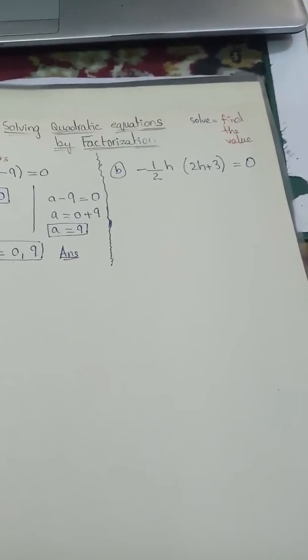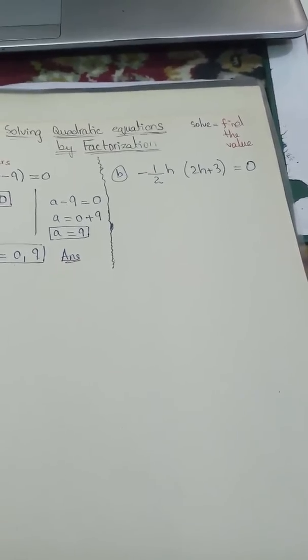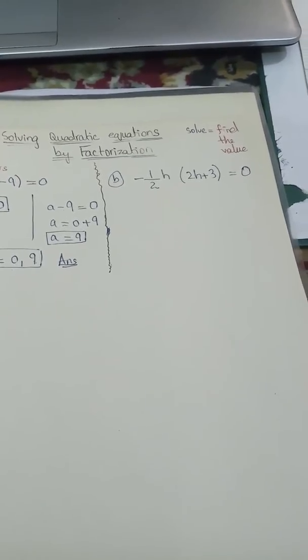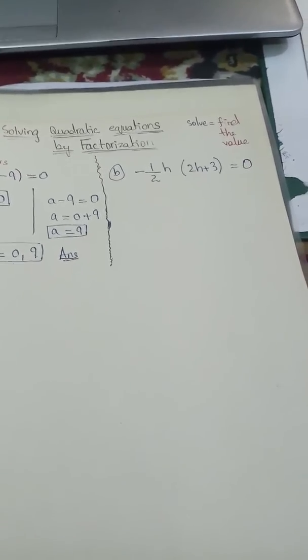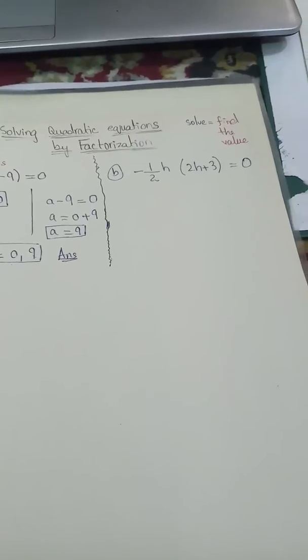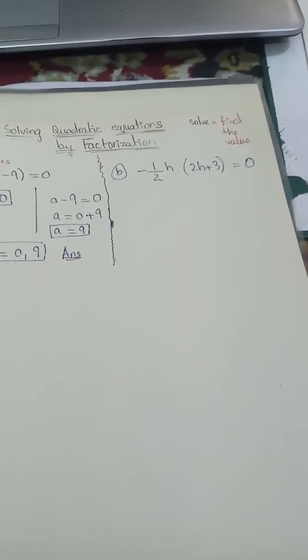Moving on to the next question, we have -½h(2h + 3) = 0. We are asked to solve this quadratic equation in order to find the value of h.